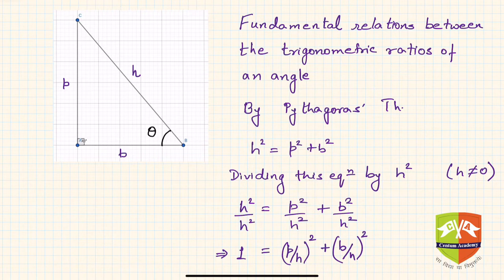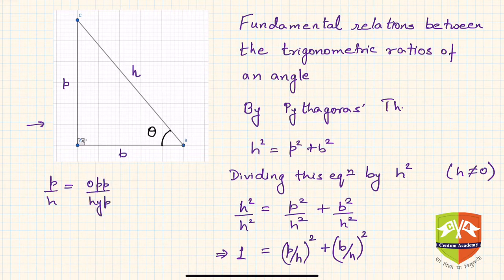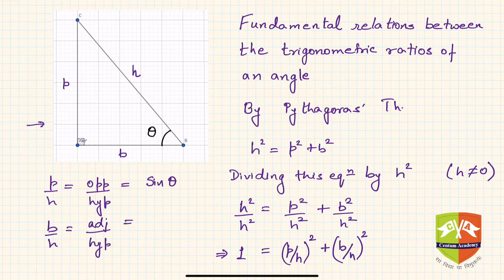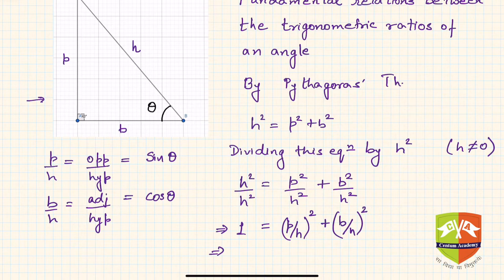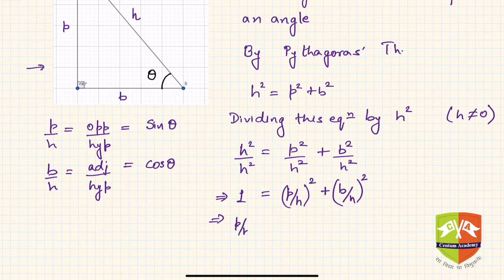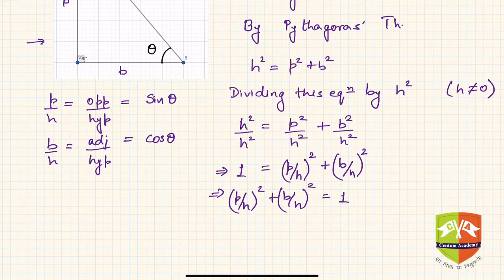Now let us understand what p/h and b/h are. Looking closely at this triangle, p/h is opposite over hypotenuse with respect to theta, which is nothing but sine of theta. Similarly, b/h equals adjacent over hypotenuse, which is cos theta. So I can replace the relationship: (p/h)² + (b/h)² = 1 becomes sin²θ + cos²θ = 1.